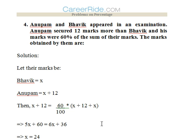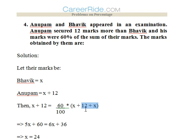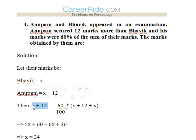4th question: Anupam and Bhavik appeared in an examination. Anupam scored 12 marks more than Bhavik, and his marks were 60% of the sum of their marks. We don't know how much Anupam and Bhavik scored, so we assume Bhavik's marks to be x and Anupam's to be x + 12. The second condition states: 60/100 x (x + 12 + x) = x + 12.